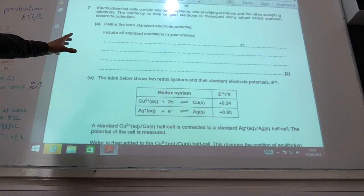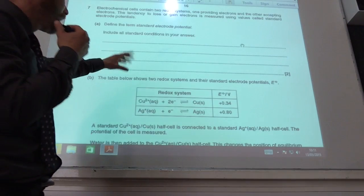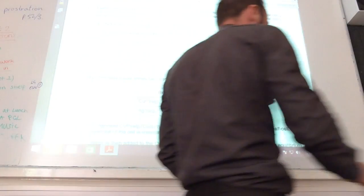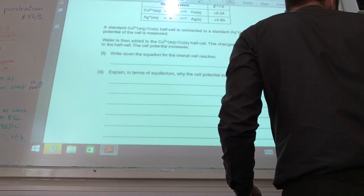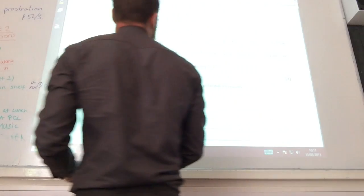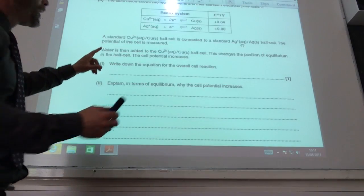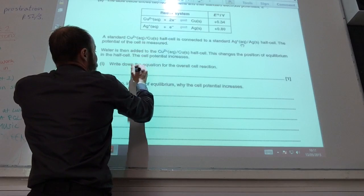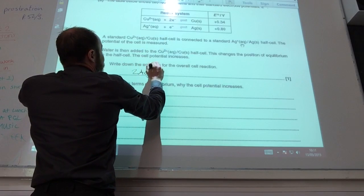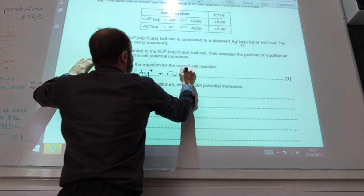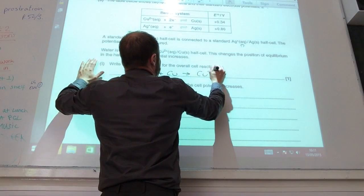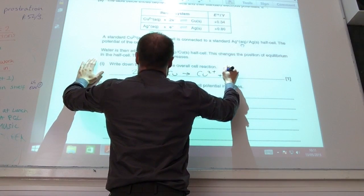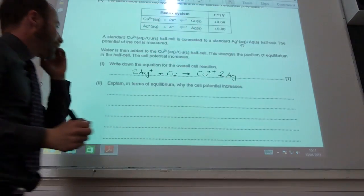Standard definition of electrode potential, including all your standard conditions. Write an equation for the open cell reaction. Which one's going to go forward? I need to times that one by 2. So copper goes to copper 2+ plus Ag, and I need two Ags like that.